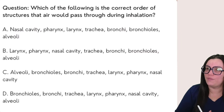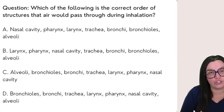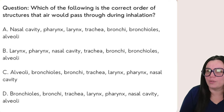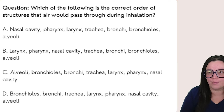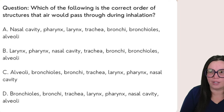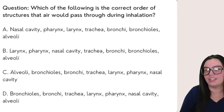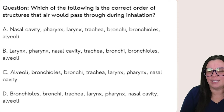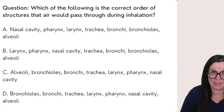Our next question: which of the following is the correct order of structures that air would pass through during inhalation? Is it A — nasal cavity, pharynx, larynx, trachea, bronchi, bronchioles, alveoli? B — larynx, pharynx, nasal cavity, trachea, bronchi, bronchioles, alveoli? C — alveoli, bronchi, bronchioles, trachea, larynx, pharynx, nasal cavity? Or D — bronchi, bronchioles, trachea, larynx, pharynx, nasal cavity, and alveoli?